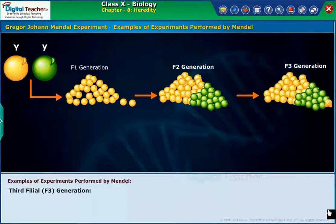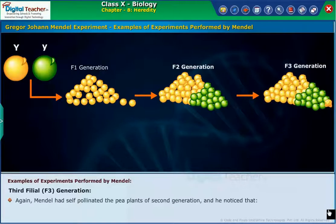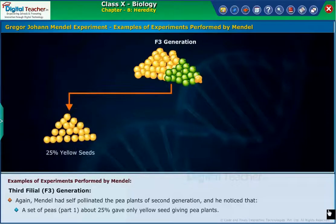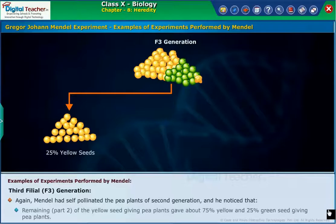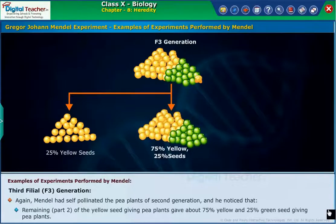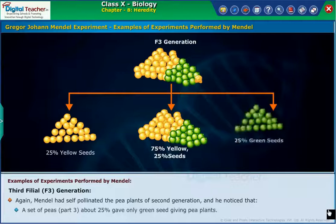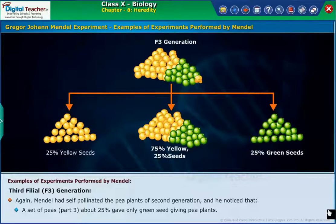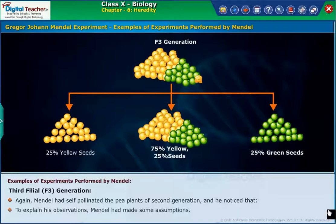In the third filial F3 generation, Mendel self-pollinated the pea plants of the second generation. He noticed that about 25% gave only yellow seed-giving pea plants. The remaining yellow seed-giving pea plants gave about 75% yellow and 25% green seed-giving plants. Another set of about 25% gave only green seed-giving pea plants. To explain his observations, Mendel made some assumptions.